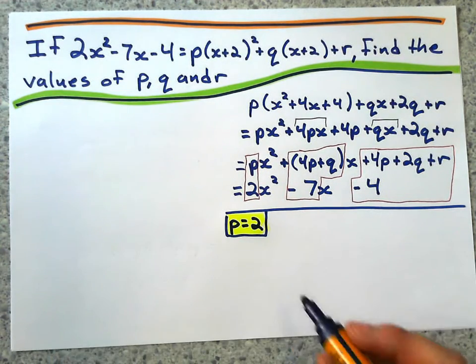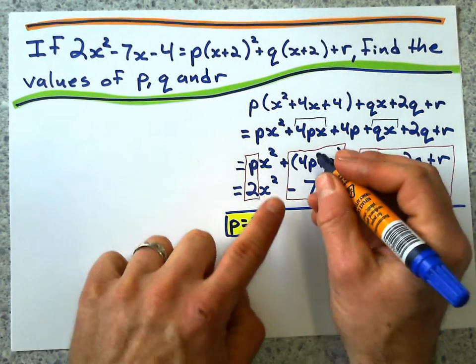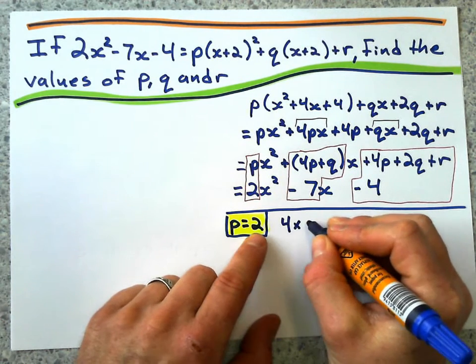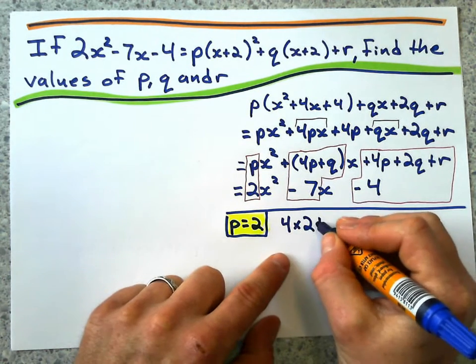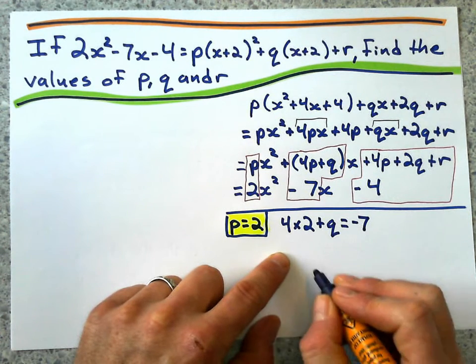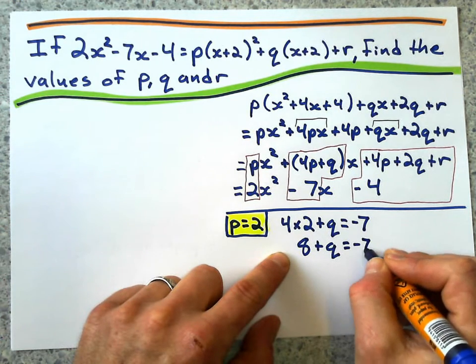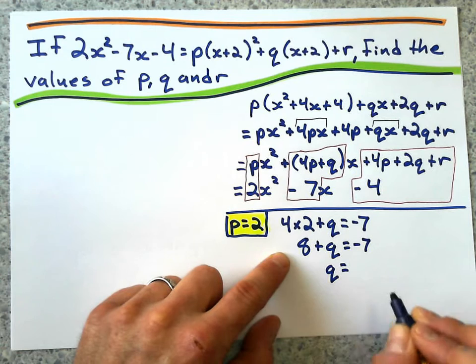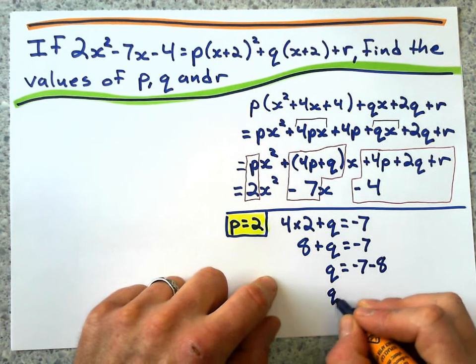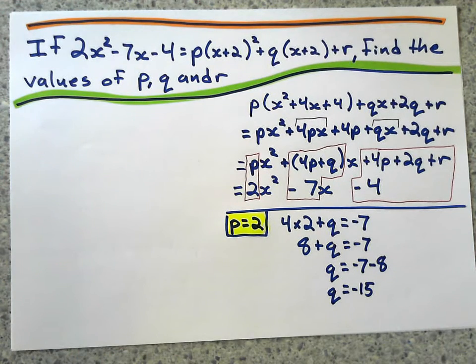Now, what happens next is kind of like a chain reaction of solving here. So if P equals 2, well, that means that I'm going to substitute it into here, and that means that 4 times 2, which is P, plus q has got to equal that negative 7. 4 times 2 is 8. 8 plus q is negative 7. That means that q must be negative 7 minus that 8. It means that q must equal negative 15. Okay, now I'm getting somewhere.